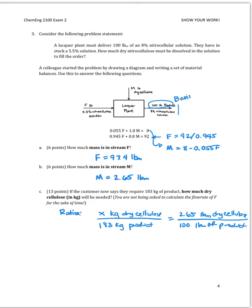So this ratio here can be very easily solved, and 183 times 2.65 over 100, X is equal to 4.84 kilograms of dry cellulose.